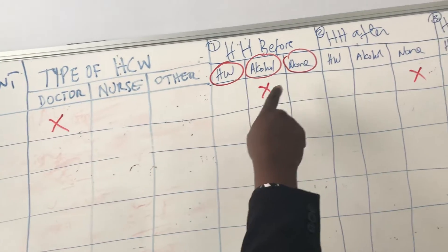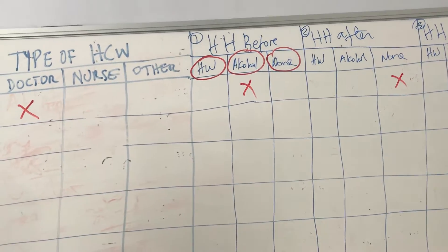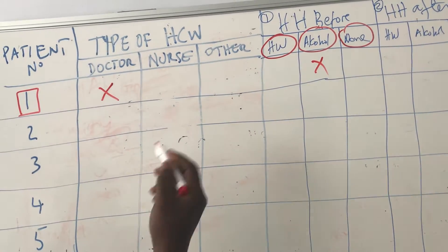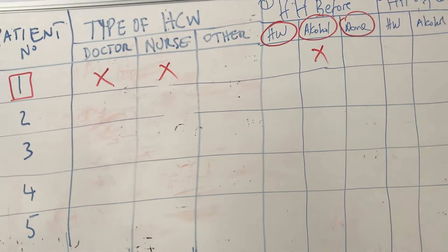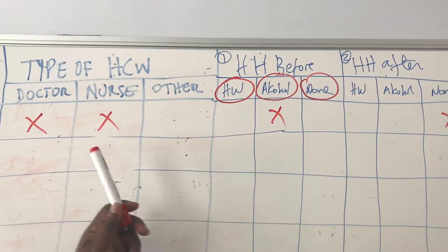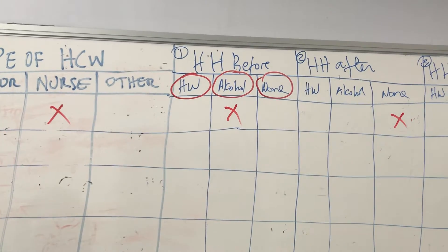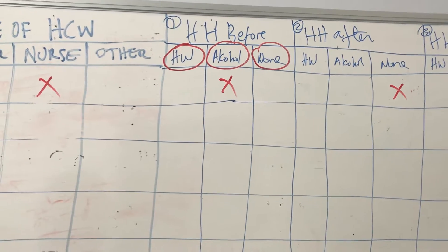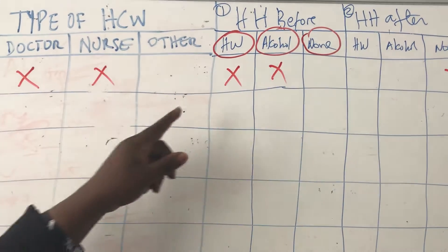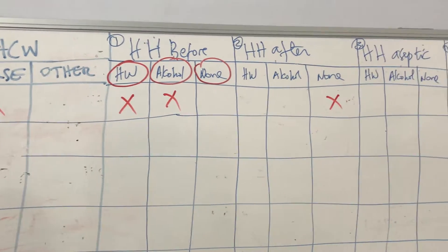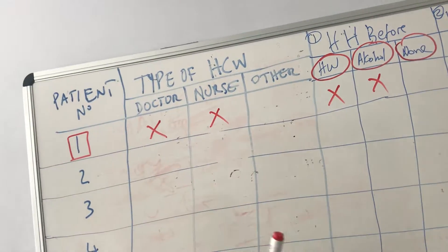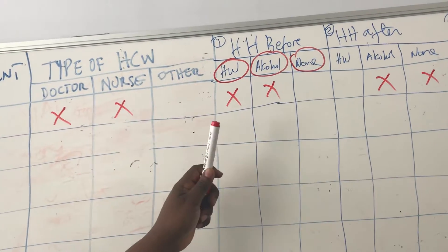As I said, for one indication you can have several opportunities. This patient — patient number one — you have a doctor, but you can also have a nurse dealing with the same patient. Maybe the nurse is going to administer medication and uses water and soap, so you tick that the nurse used water and soap. After contact, maybe the nurse used alcohol hand rub.